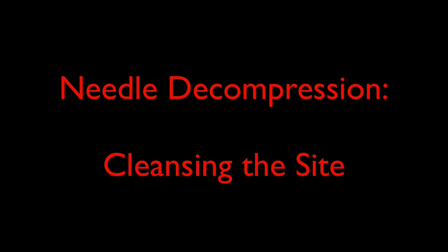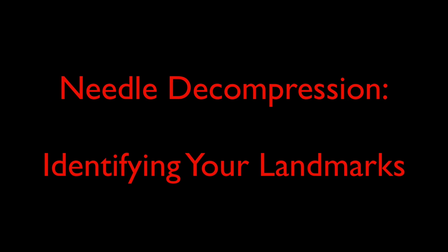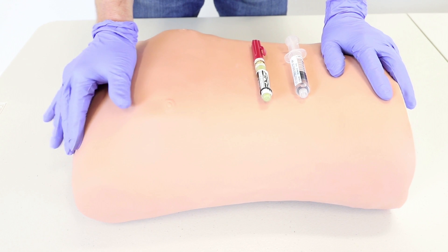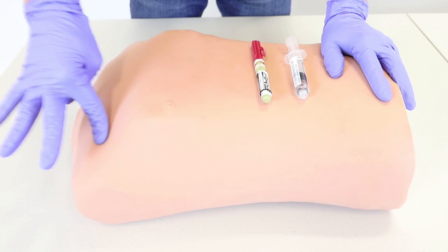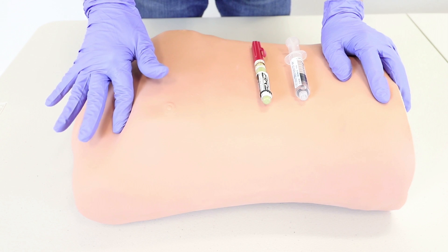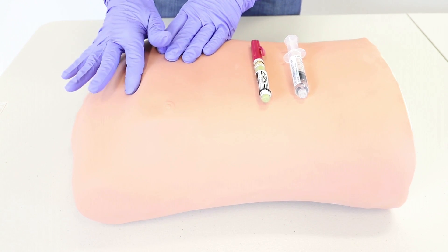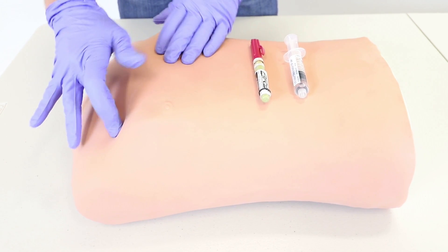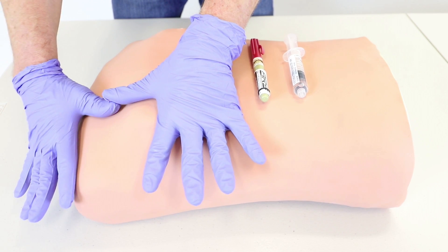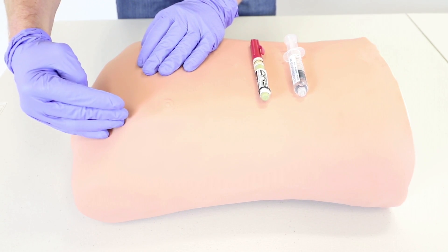Cleanse the site with betadine using a circular motion to protect the patient. For landmarks, go to the second intercostal space — the first rib is under the clavicle, so roll down from the clavicle to the first rib, then the second rib, and the space below that is your second intercostal space. If the patient is obese you can find the angle of Louis and roll down to confirm. Go mid-clavicular — lateral to the nipple, in this upper quadrant.